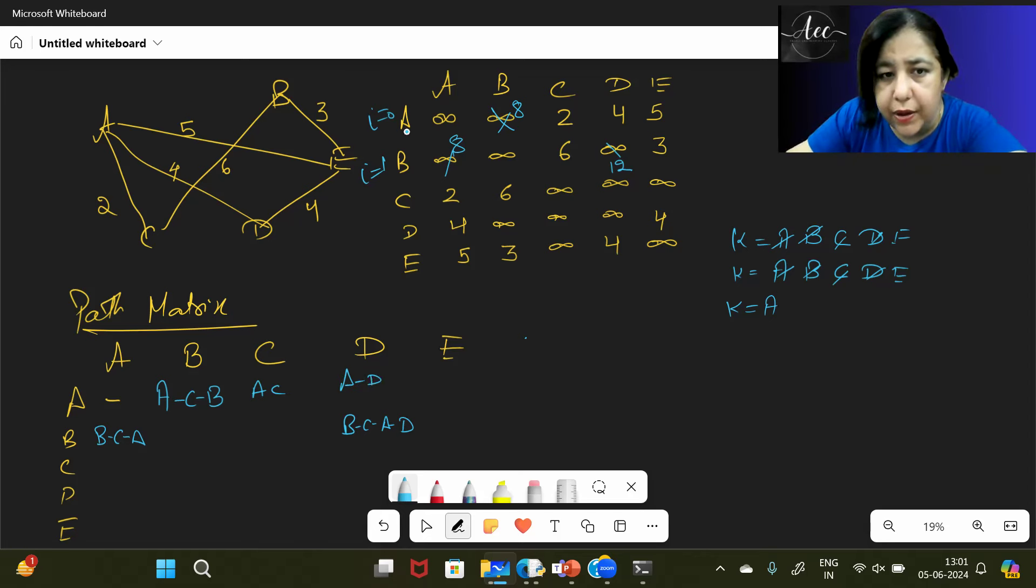So B to A the path was B, C, A. So B, C, A, and then D. So from B you will go to C, C to A, A to D, and the distance will be 12. That will be the distance. Here your distance is directly marked, because their direct distance, you can directly mark it.